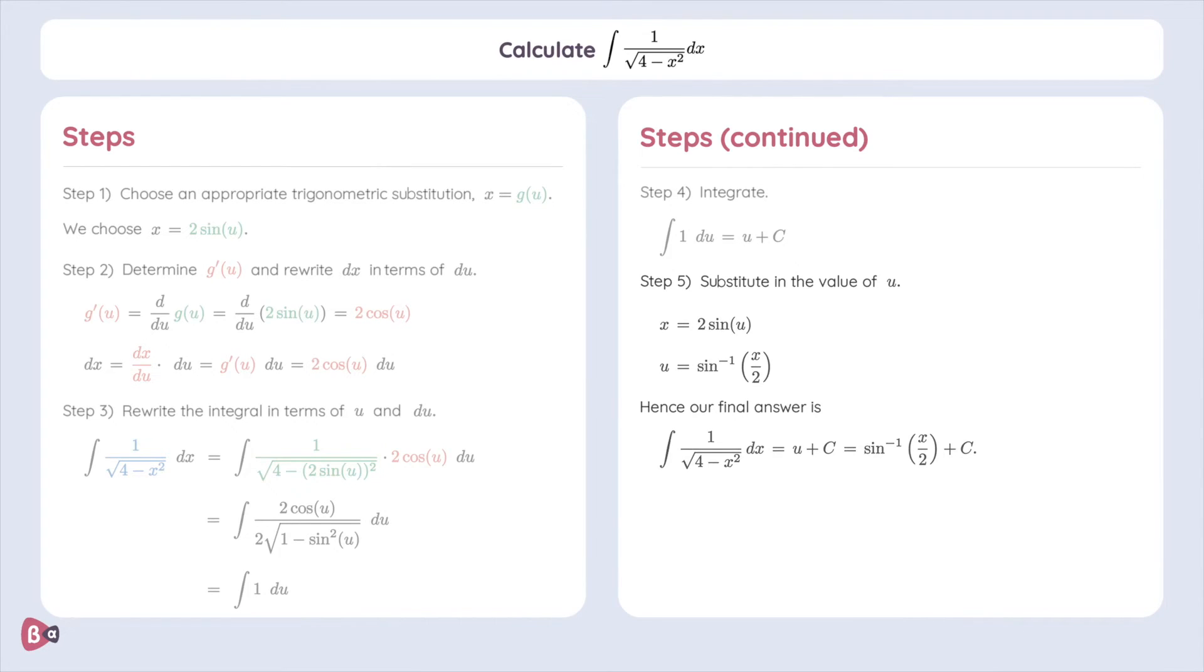Wow, that was a lot. Let's recap. We wanted to calculate the integral of 1 divided by square root of 4 minus x squared dx. We found a substitution function x is equal to g of u is equal to 2 times sine of u. We calculated g prime of u to be equal to 2 times cosine of u.